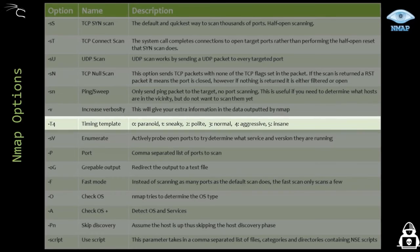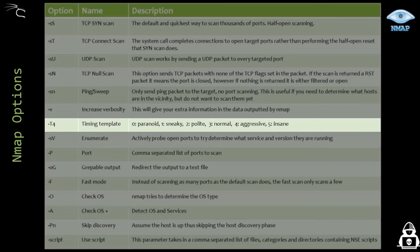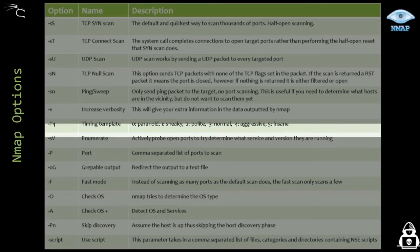The -T template option can be used from zero to five — it's a timing template. Three is the default, five is the fastest, and zero is the slowest. It can range from a couple of milliseconds for an insane scan to a couple of minutes for a paranoid scan.